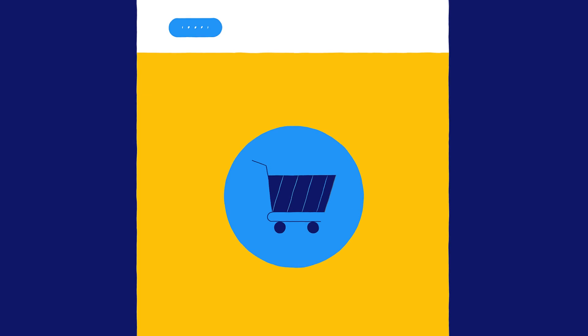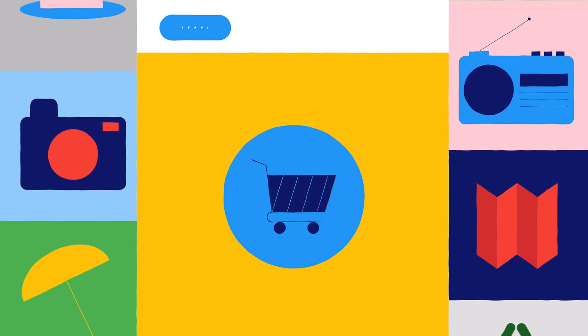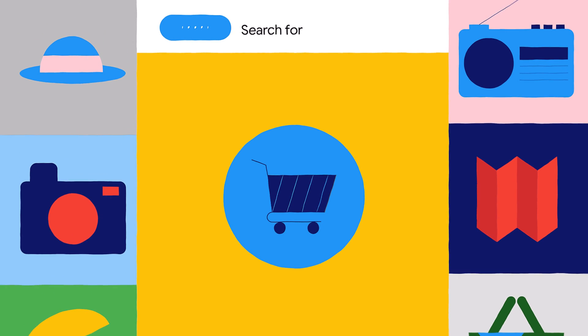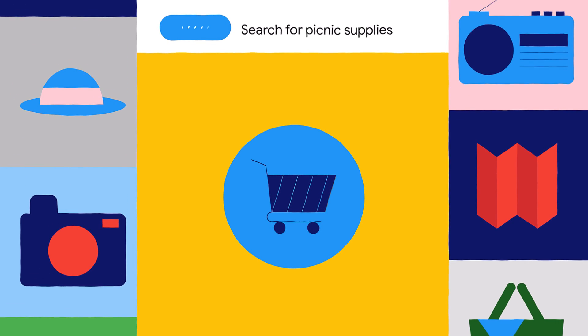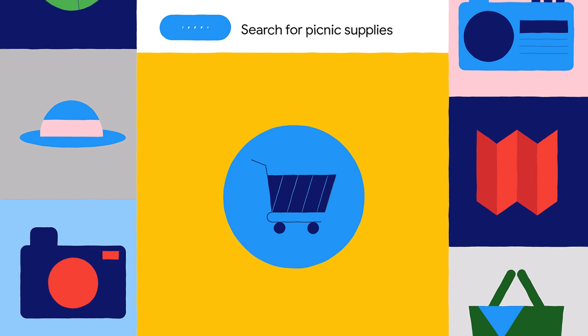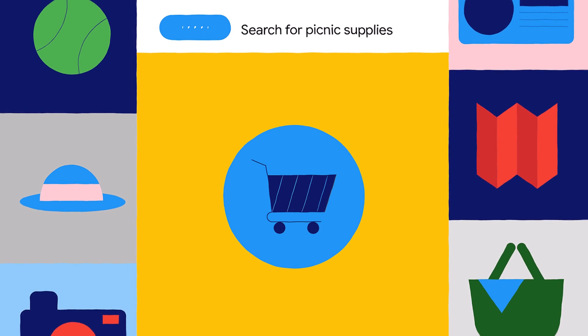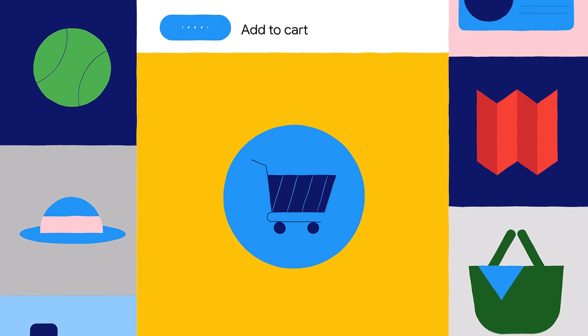If you're online shopping, you can search for whatever items you need by saying "Search For" and the name of the product. When you find what you're looking for, use Voice Access to add it to your cart and checkout.